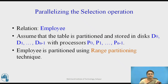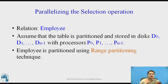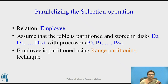We want to parallelize the selection operation. The selection operation may be SELECT * FROM some relation, but more number of tuples are there and we want to do that in parallel. We are considering the relation as employee. Assume that the table is partitioned and stored in some disks, so we have n partitions — n disks d0, d1, ... dn-1 — associated with processors p0, p1, ... pn-1. Parallelly, every processor will work on a particular operation such as selection. The employee relation is partitioned using the range partitioning technique.